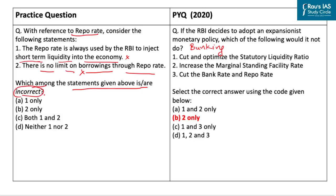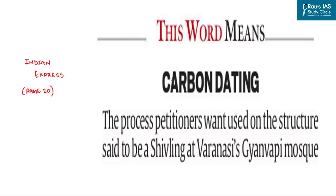The question asks which of the statements given above is or are incorrect. We need to be very particular about the keywords used in the statements by UPSC. As per the demand of the question, both statements are incorrect, and thus the correct answer is option C — both 1 and 2 are incorrect.